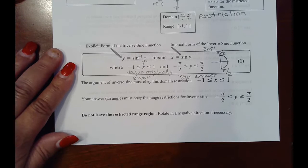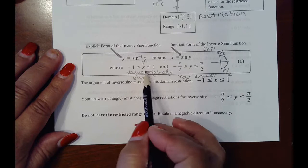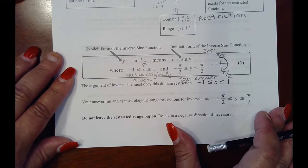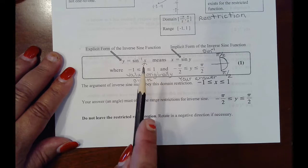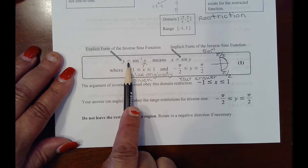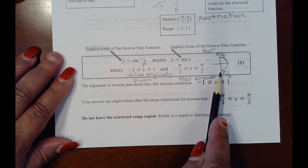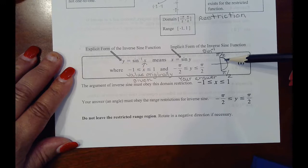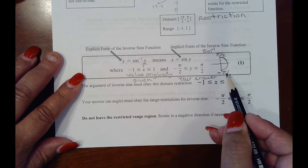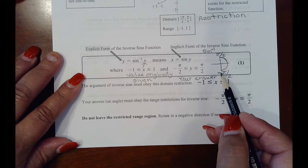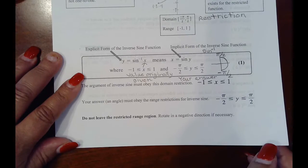You can press this into the calculator and right away you'll see if you're out of this zone. The restriction is stated three times here. The value originally given must be between negative one and one — that's the argument of the original inverse statement. Your answer needs to be restricted within this region, somewhere between negative pi over 2 and pi over 2. I would put that on a note card and memorize it. Your answer needs to be somewhere in either quadrant one or quadrant four.